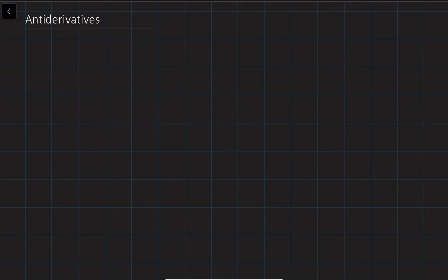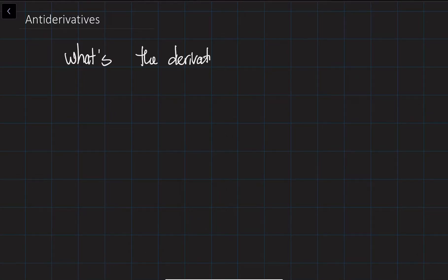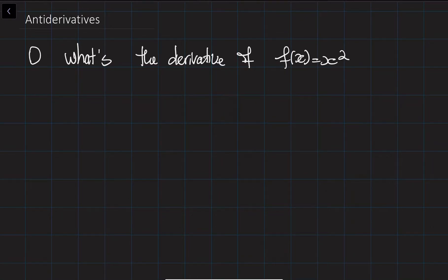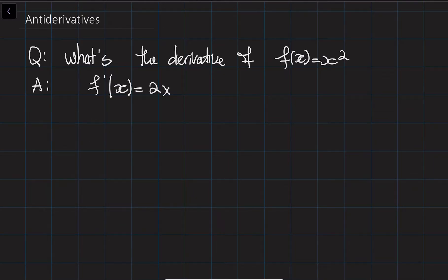In the beginning of the lecture I would like to ask you a question: what is the derivative of x squared? The answer is f prime of x which is equal to 2x, as we did before using the formula of derivatives for power functions.